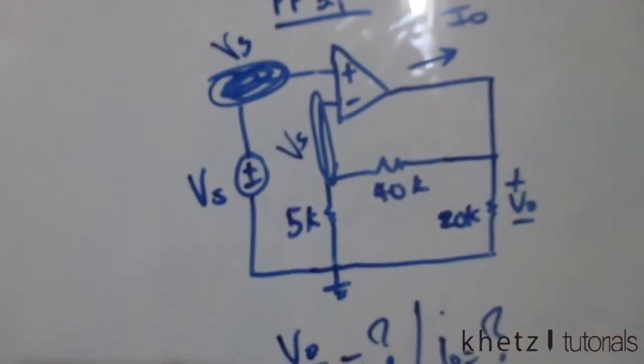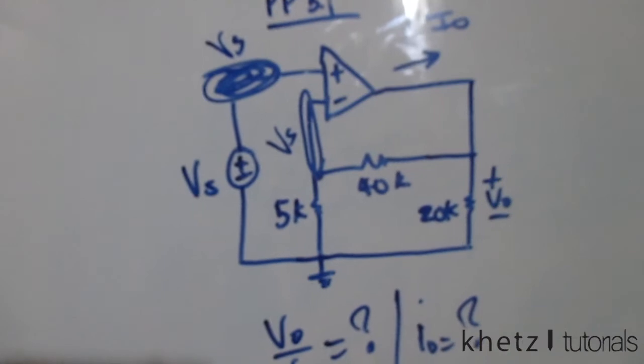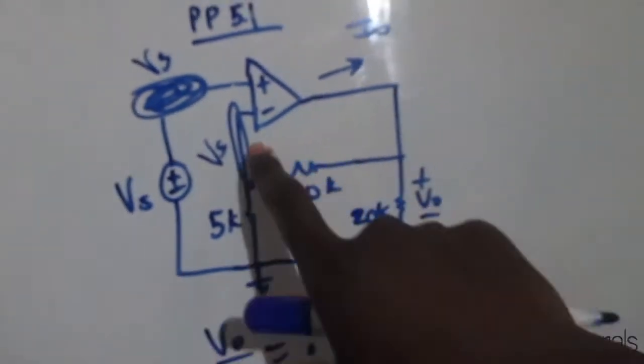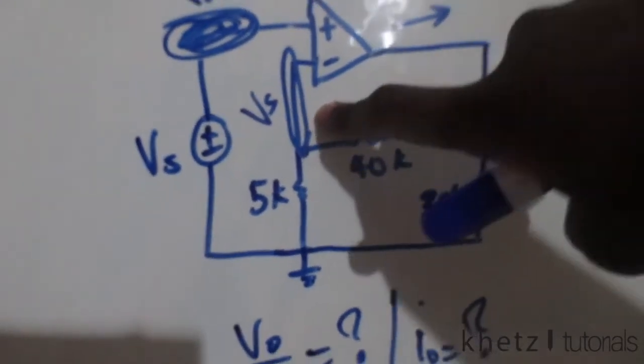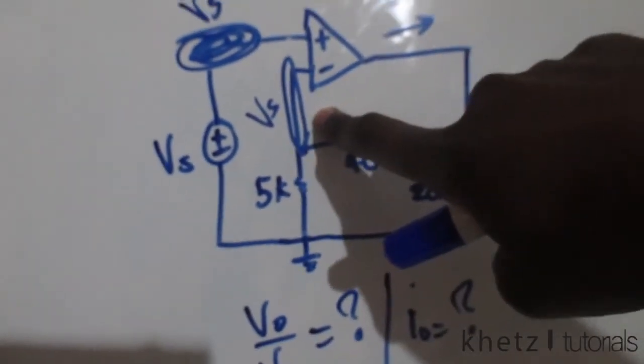That is given in the textbook and that is basically how op-amps work. Now that we have vs at this node or at this terminal, we can therefore do our nodal analysis to actually find the relationship between vs and vo.